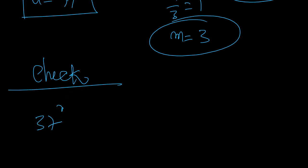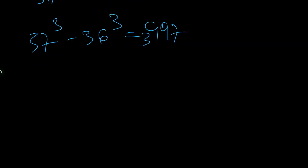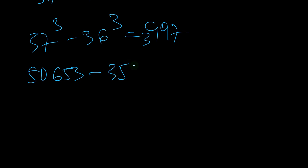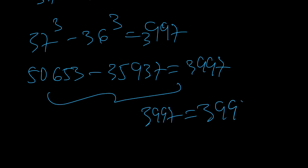Let's check: 37 to the 3 minus 36 to the 3 should equal 3997. Using a calculator: 37 cubed equals 50653, and 36 cubed equals 46656. The difference is 50653 minus 46656, which equals 3997. That's exactly what we want.